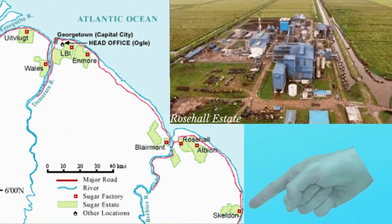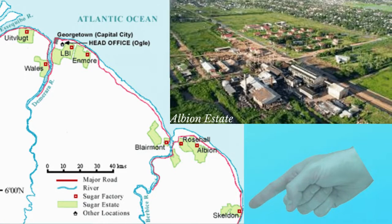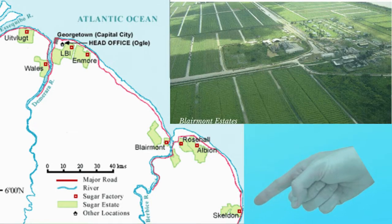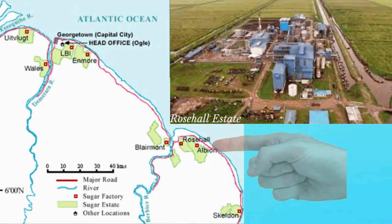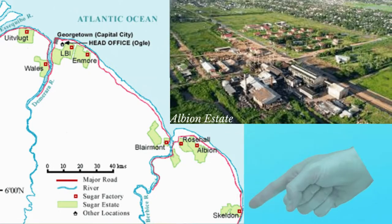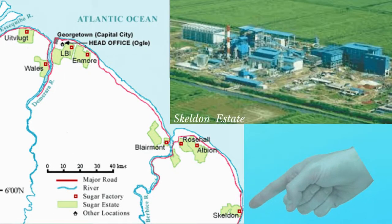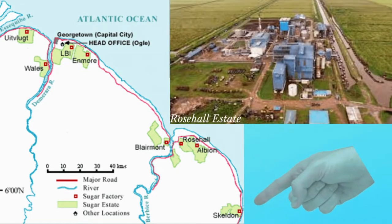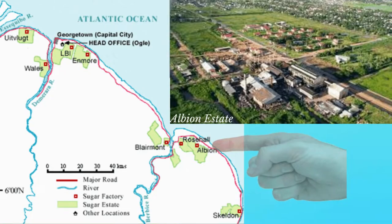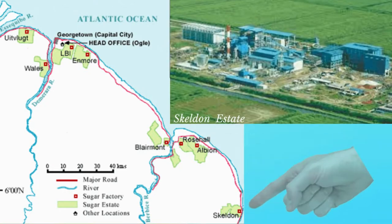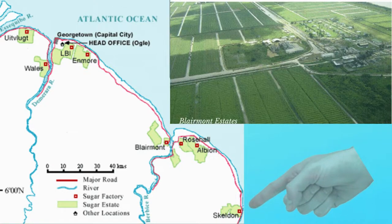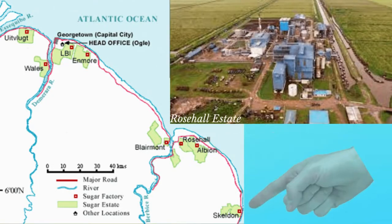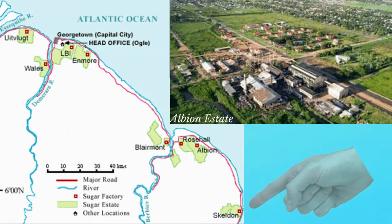Further south is the Blairmont estate, located on the west bank of the Berbice River. East of the Berbice River are the Albion and Rose Hall estates. The most southern estate, located on the western bank of the Corentyne River, is the Skeldon estate.